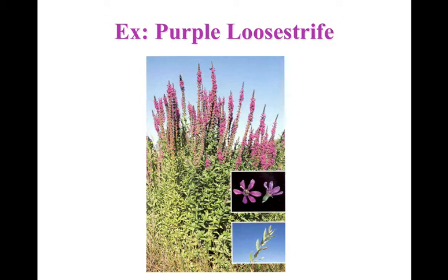Another example of an invasive species in our area is purple loosestrife, typically found in Europe. Back in the 1800s, people thought wetlands with their green plants and brown cattails were boring, so they introduced this purple-flowered plant to liven things up. With no natural predators to eat it, purple loosestrife started to take over all the wetlands. If you drive around now at the beginning of summer, you'll see those beautiful purple blooms in wetland areas — that is purple loosestrife.